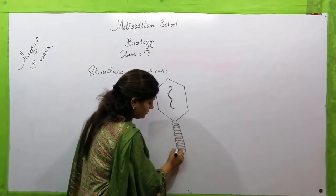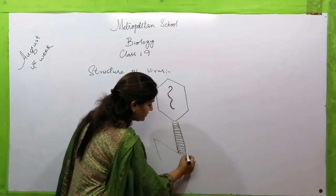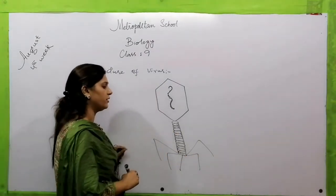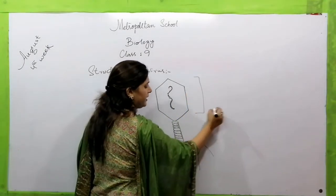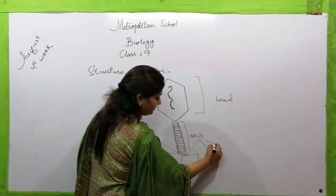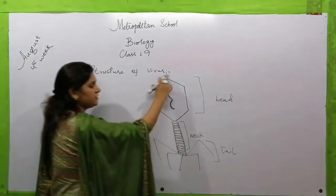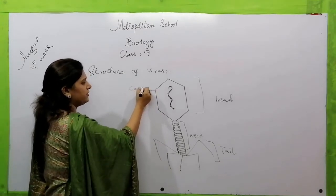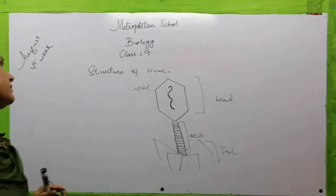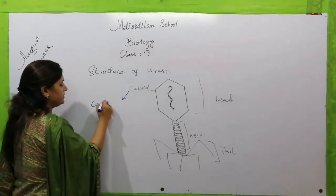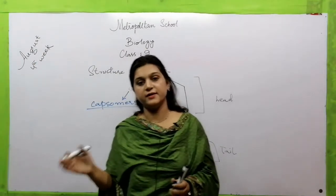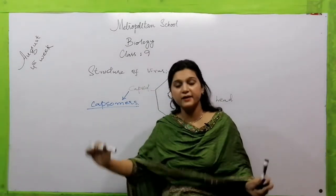In the bacteriophage virus, there is a head region, a neck region, and at the end, tail fibers are present for attachment to the bacterial body. The capsid is made up of protein, and the protein subunits are called capsomers. The number of capsomers can vary from virus to virus.